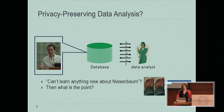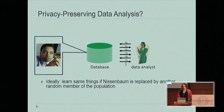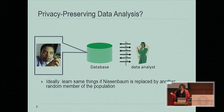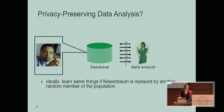That's a definitional choice. Do we want to call this a privacy compromise? We took the position that no, this is not a privacy compromise. The reason is we would have learned the same things if Helen had been replaced by another random member of the population. We didn't learn about Helen — we learned about people. So with this approach, we disentangle learning about the population as a whole from learning about the individuals who are in the data set.